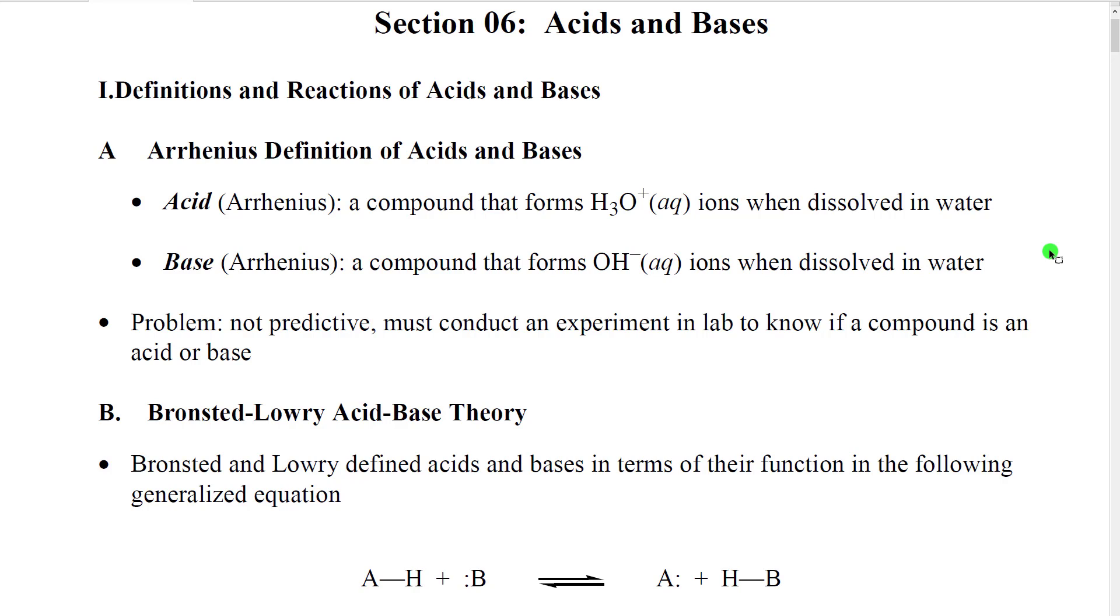However, there was no predictive value to this definition. In order to know if a substance were an acid or a base or neither, you had to conduct an experiment in the lab. You had to dissolve it in water and look and see if the concentration of hydronium increased or the concentration of hydroxide increased or if there were no change in the pH.